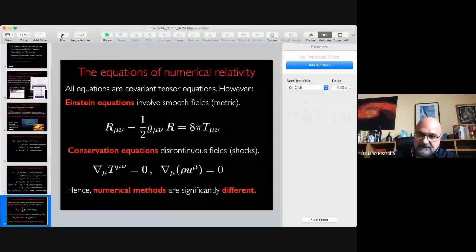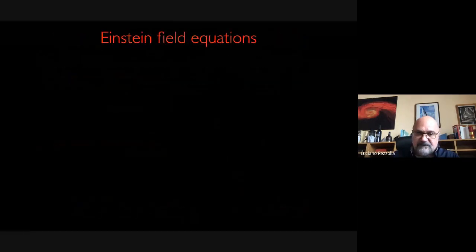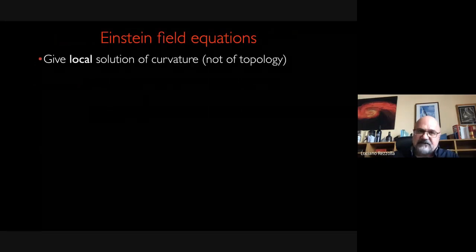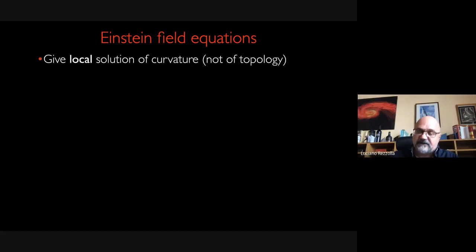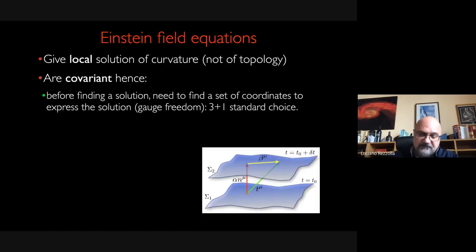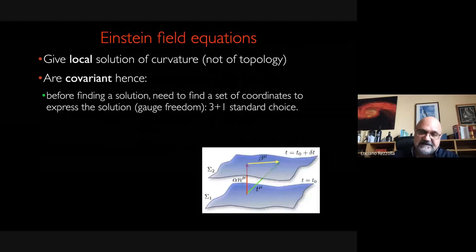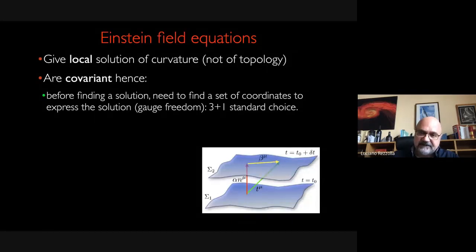The Einstein equations give you a local solution of the curvature. They don't give you any idea of the topology of the full space-time, and they are covariant. So you first have to find a proper set of coordinates that describes the solution. In Galilean physics, even in special relativity, this is not problematic because you can easily find good coordinates. But in general relativity this is a must. That is why we tend to split our space-time: we have a three-dimensional hypersurface, and then we find a solution on one hypersurface and evolve to the next through an evolution equation. We need to account for the fact that time and coordinates can change between one slice and the other because coordinates may be distorted by the presence of curvature.